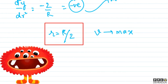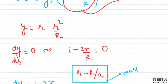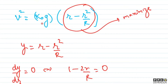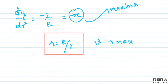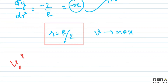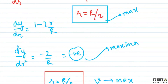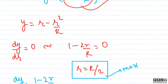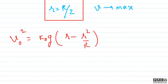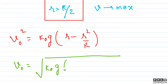We've solved the first part. For the second part, we need to find the actual maximum speed. The formula we derived was v² = k₀·g · (r - r²/R). We substitute r = R/2 to find v_max.